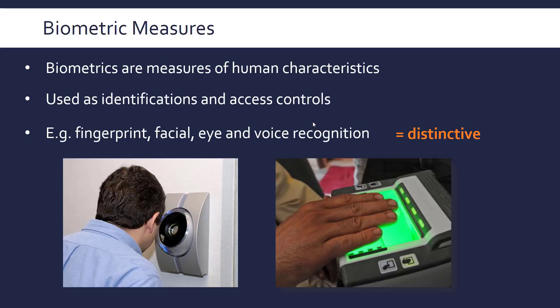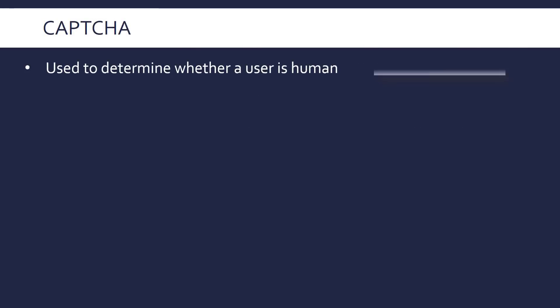Biometrics are good security measures because the characteristics are very distinctive. There are issues with all of them — for example, facial ID has a problem if you have twins. They're also prone to going wrong. But these can be used in combination with a password; the more levels of identification you have, the better. We also have CAPTCHA, which is a measure used to determine whether a user is human. You've all seen these before, though they're less common now because computers have become good enough to interpret them.